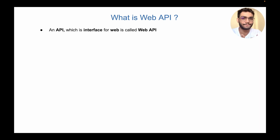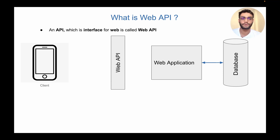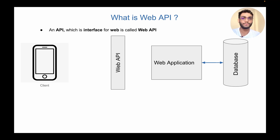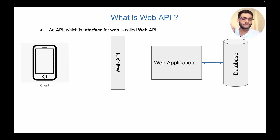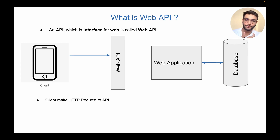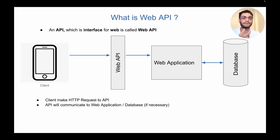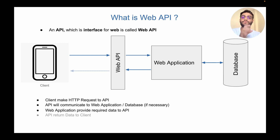Let's see what components we have. We have a client, we have our web API, we have our application — the server in which the code is written. It could be Python, a Python framework like Django, Flask, Pyramid, or it could be Java, PHP, Laravel, or anything. Whenever a client makes an HTTP request to the API, the API takes that request and brings it to the server. The server may query the database if needed, does some processing, and brings the response back to the API, which then shows the response back to the client. This is the whole process that happens in the application.